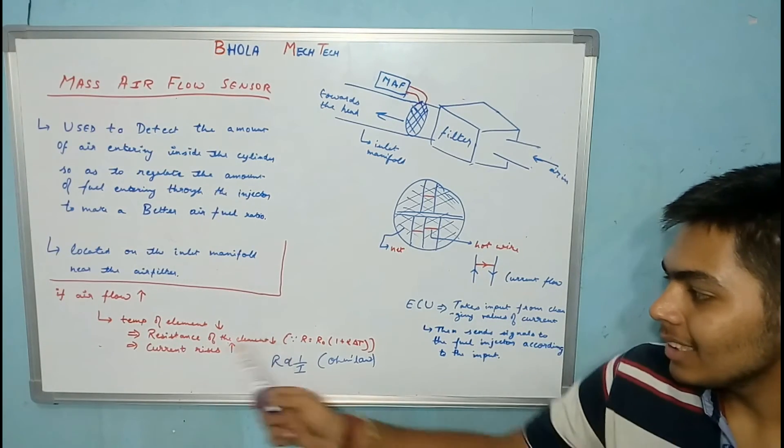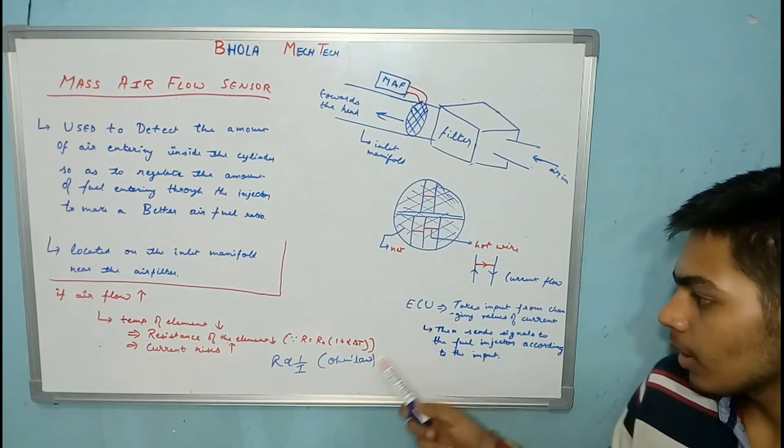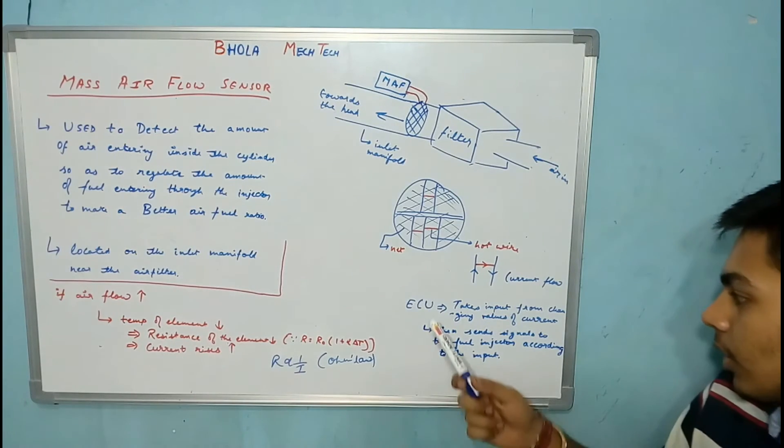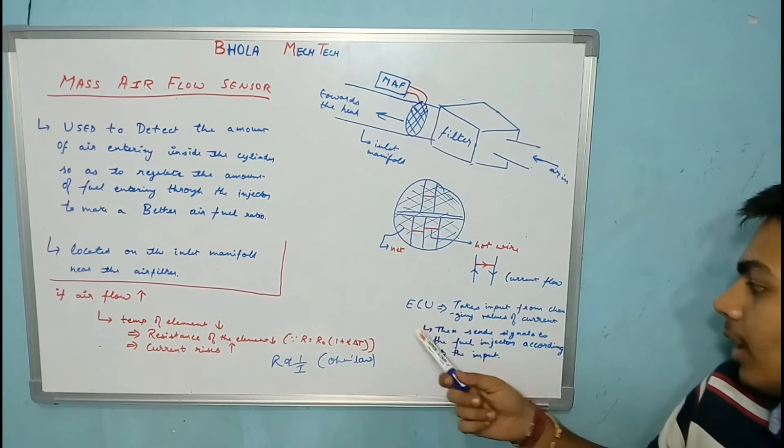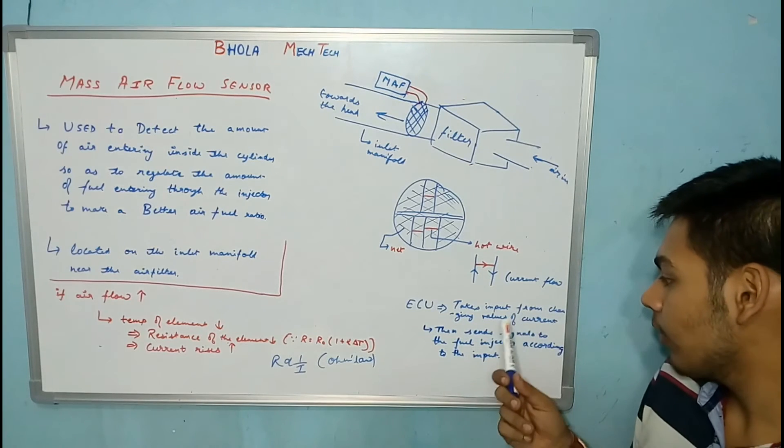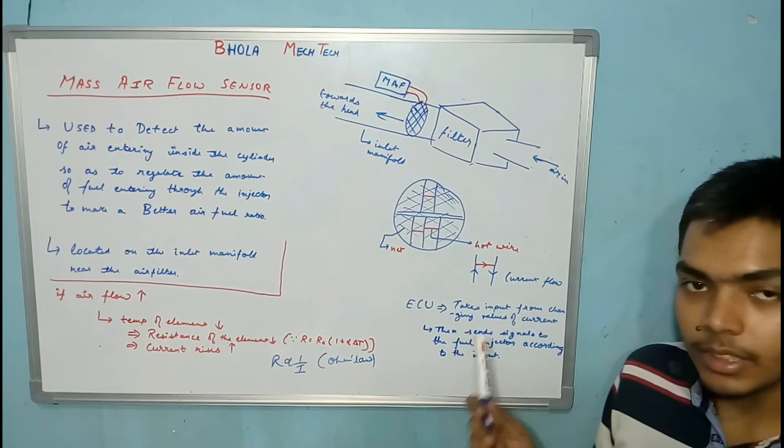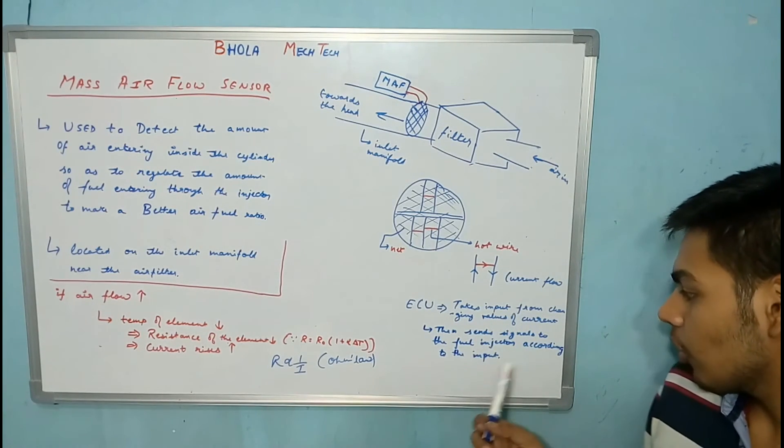These electrical signals are sent to the ECU. The change in current is sent to the ECU. The ECU takes the input from the changing values of current and then sends these signals to the fuel injector according to the input.